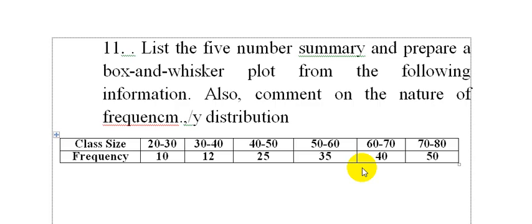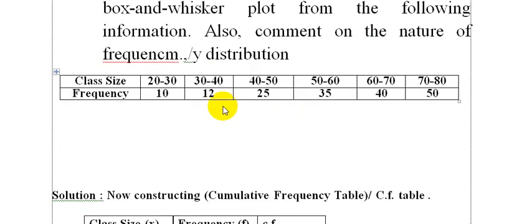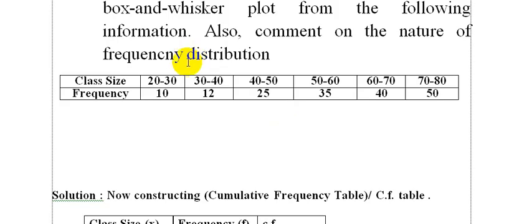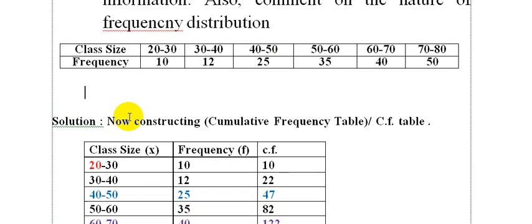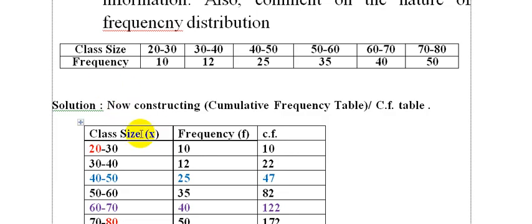Find the five-number summary and prepare a box and whisker plot from the following information, also comment on the nature of the frequency distribution. The class sizes are 20-30, 30-40, 40-50, 50-60, 60-70, and 70-80, with frequencies 10, 25, 25, 40, and 50. Now constructing the cumulative frequency table.